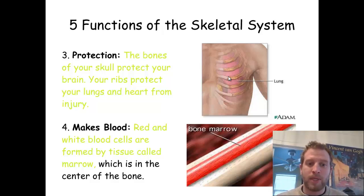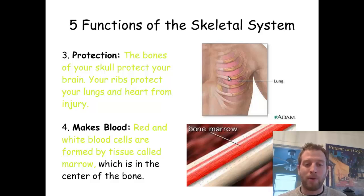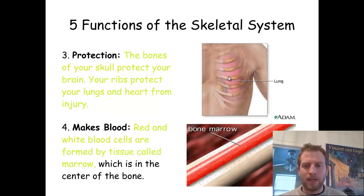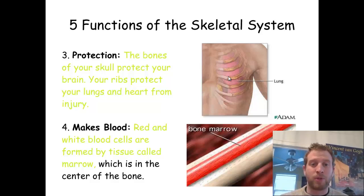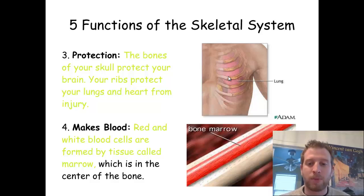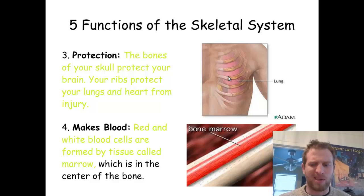Fourth thing: your bones help make blood. The red and white blood cells are formed by tissues inside the bone called marrow. It's the center of the bone, right in the middle, and it's actually something that's very nutritious as well. If you ever have marrow soup, it's fantastic — you boil the heck out of some chicken bones and get the marrow out the middle. I wouldn't go eating human bones, though. Kind of strange.